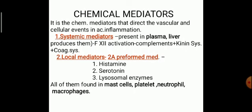First are the systemic mediators, present in plasma — produced in the liver — and factor 12 activation, complement plus kinin system, and the coagulation system. The second is the local mediators. In these local mediators, the pre-formed mediators are histamine, serotonin, and lysosomal enzymes. All of them are found in mast cells, platelets, neutrophils, and macrophages.